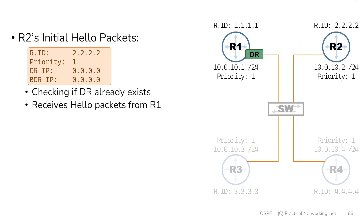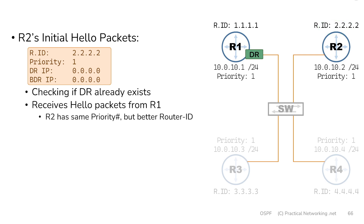At some point, router 2 is going to receive a hello packet from router 1. Notice that router 1 and router 2 both have the same priority number. We already mentioned that if there's a tie, the router IDs are going to break the tie — and the highest router ID is better. Router 2 has a higher router ID than router 1. However, the designated router election process does not preempt. Meaning, if there's a DR currently on the link and doing its job, a new router with a potentially better priority or router ID is not going to become the new DR. Router 1 will remain the designated router on this link.